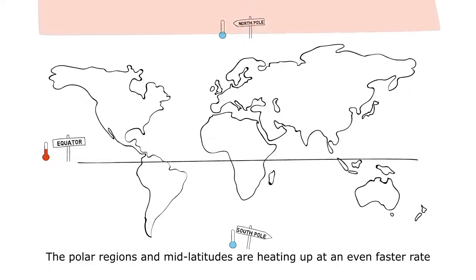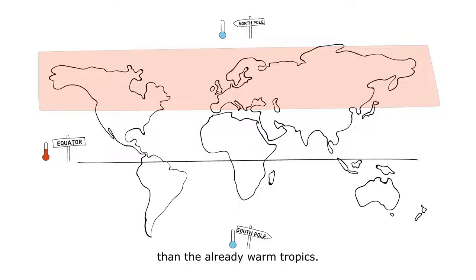The polar regions and mid-latitudes are heating up at an even faster rate than the already warm tropics. Warming is particularly intense over vast land areas.